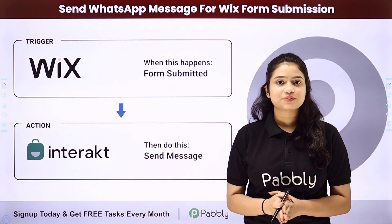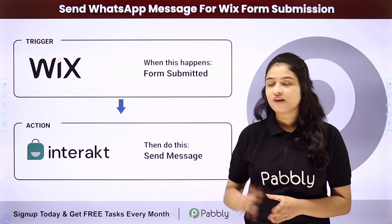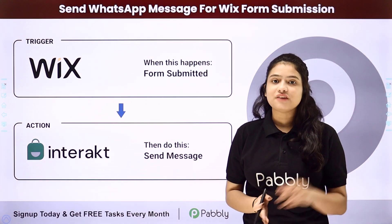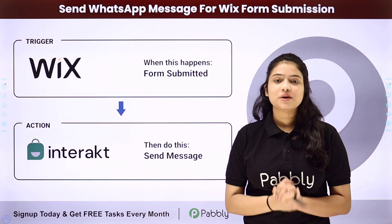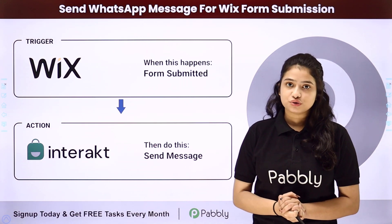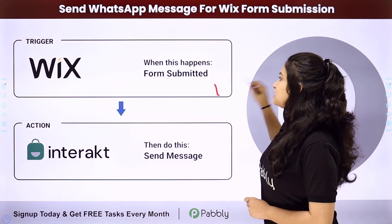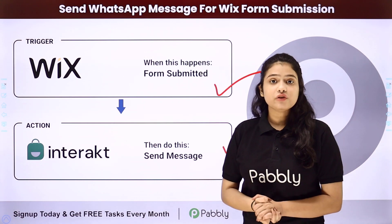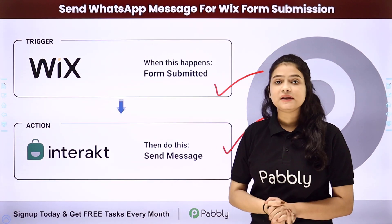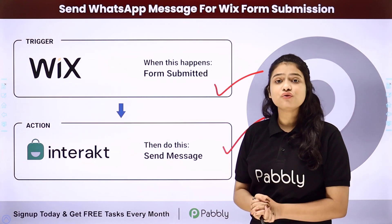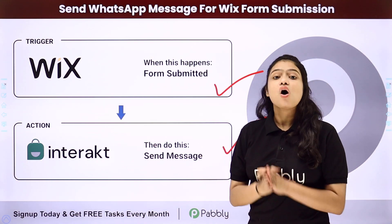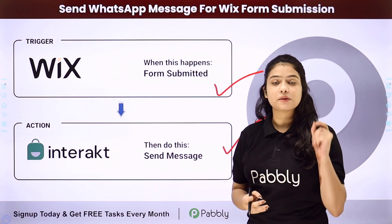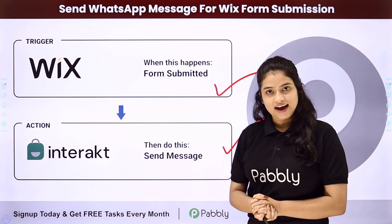So how are we going to do this process automatically? For that, we will have to integrate both these applications using Pabbly Connect. We have Wix forms as our trigger and Interact as our action. We will connect both of them so that whenever a new form is submitted in Wix forms, automatically a WhatsApp message will be sent to that person using Interact.